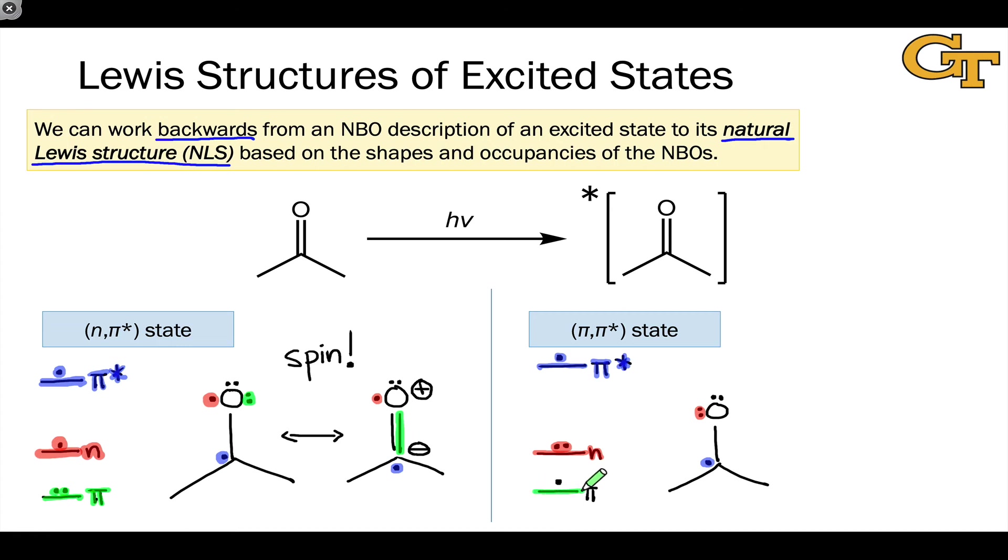The only thing we have left to do here is to account for this π electron. Well, using an analogous argument that we did for the π* orbital, we can locate this electron on the atom that has the larger lobe in the π orbital. Let's think back to polarized NBOs and how we think about those. The more electronegative atom is oxygen, and so it makes the most sense to localize that electron right here. And here we have it. This is a valid natural Lewis structure based on the electron configuration that's suggested by this orbital energy diagram.